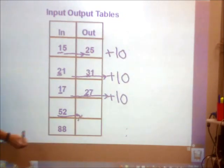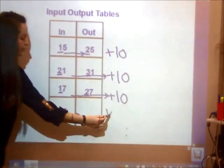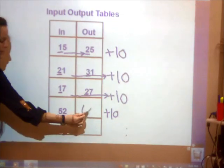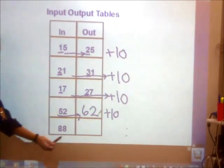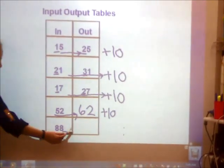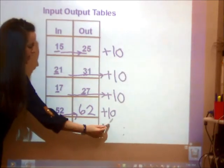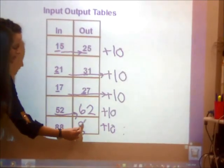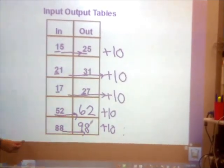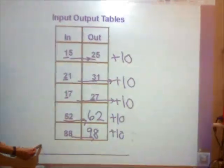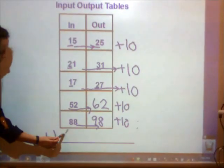Let's add 10 to 52. 52 plus 10 is 62. 88 plus 10 is 98. Our rule must be adding 10.